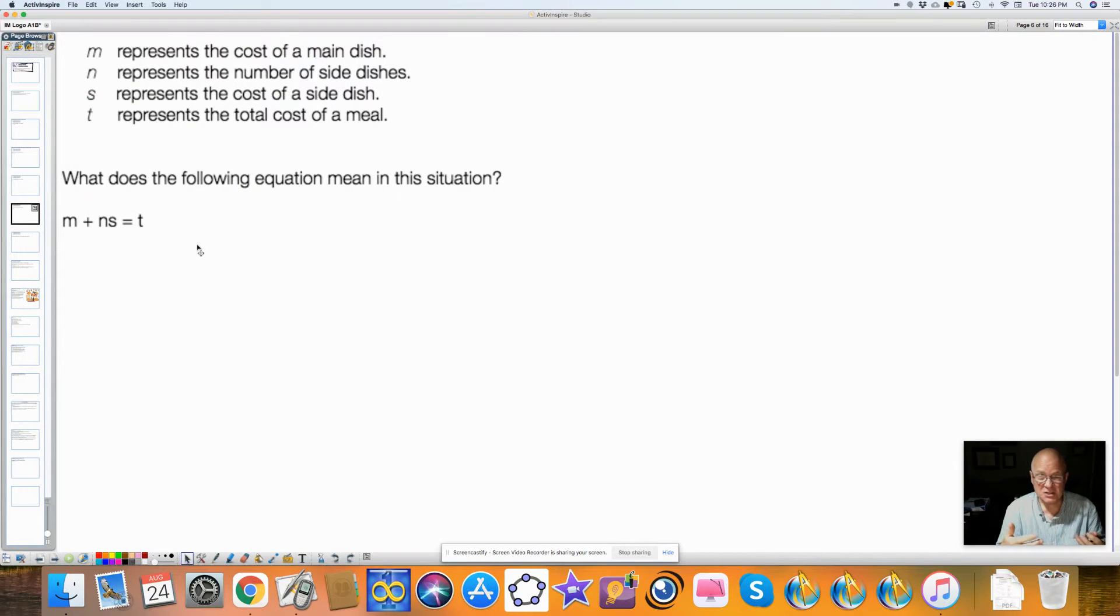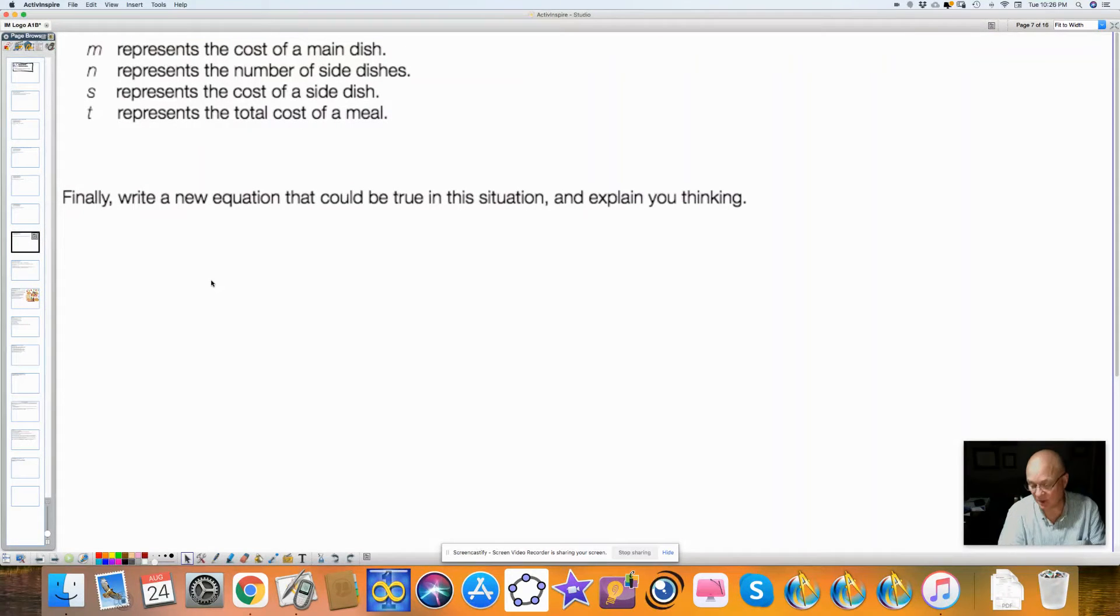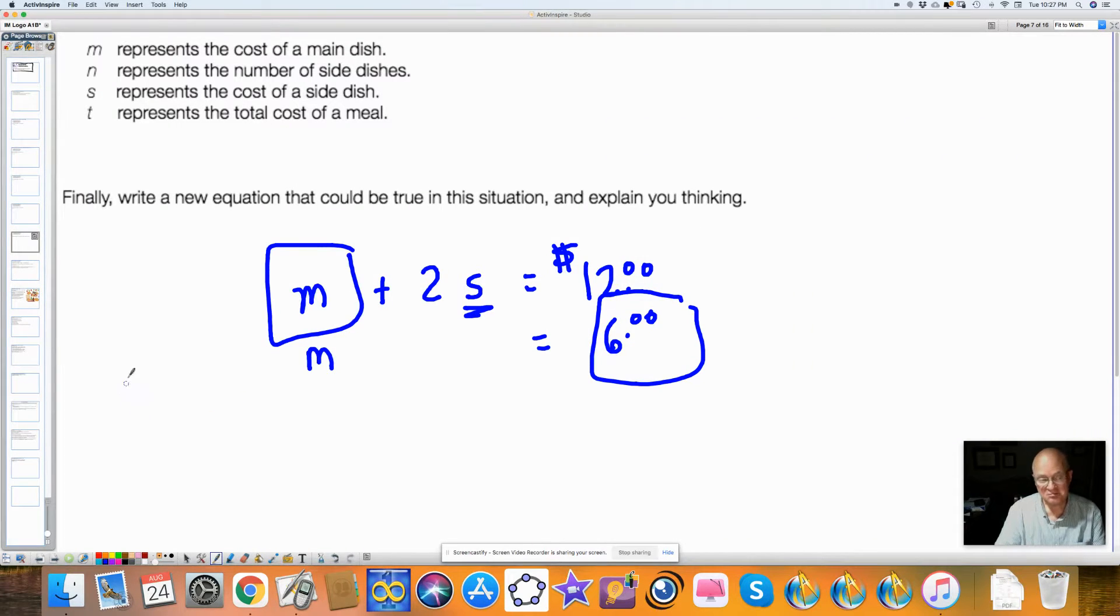Then you're supposed to write your own and then explain your thinking. So if I wrote like, if M, the cost of the main dish, plus I'm going to say I have two side dishes, and I'm going to say that that's equal to $12. Because mine is really expensive. And if at the same time I also told you that the main dish is equal to $6, you could actually find out what the cost of the side dish is, couldn't you? Because this would be equal to this. You could actually substitute this value in for the main dish.